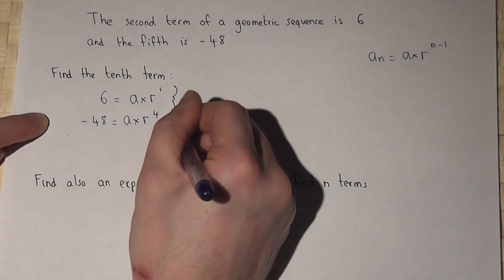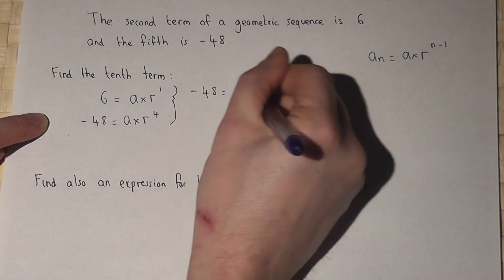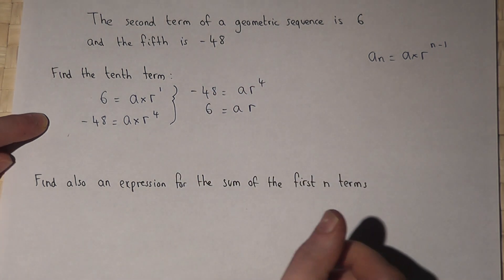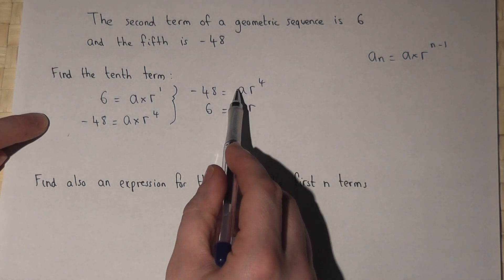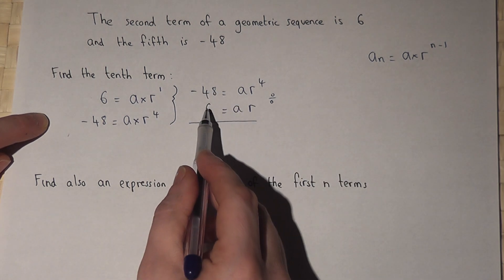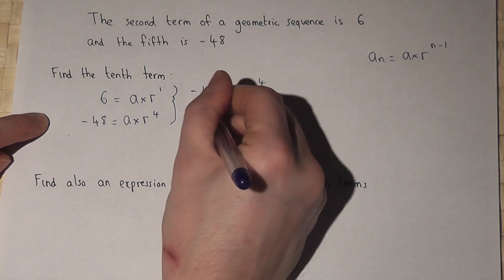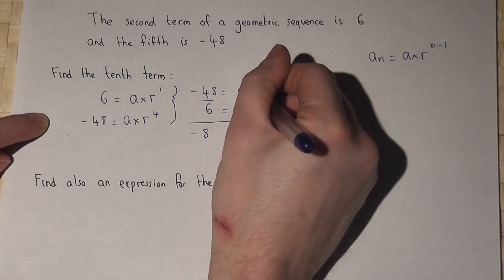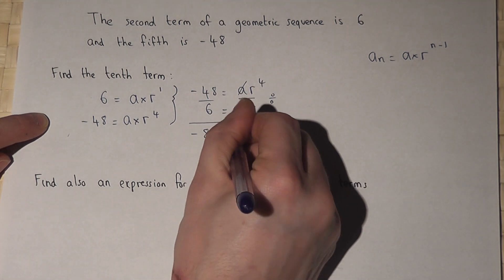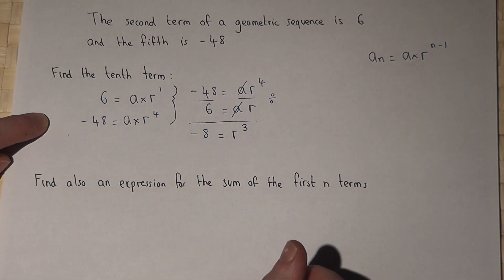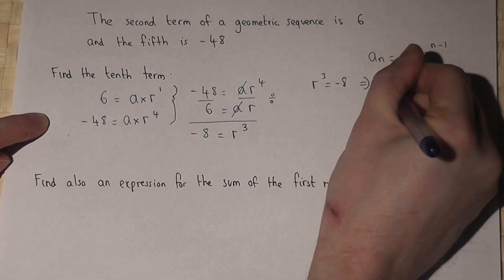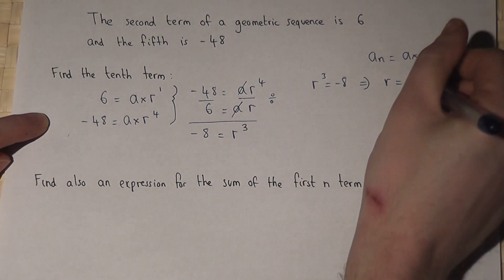Rewriting these: minus 48 equals a times r to the power of 4, and 6 equals a times r. Dividing the top equation by the bottom equation: minus 48 divided by 6 is minus 8. The a terms cancel out, and r to the power of 4 divided by r is r cubed. So r cubed equals minus 8.